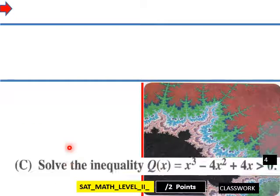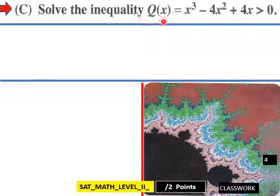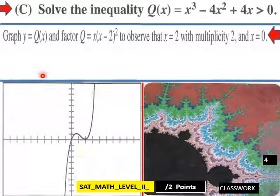And then we go into one more. Solve the inequality Q(x) = x³ - 4x² + 4x > 0. So graphing this Q(x), we have this. And factor Q = x(x - 2)². To observe that x = 2 with a multiplicity of 2, which would put this right here.